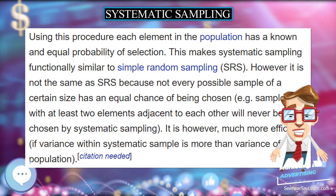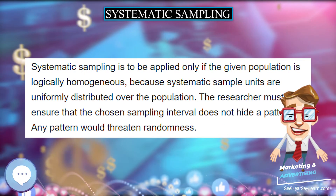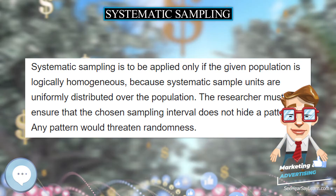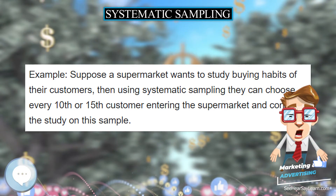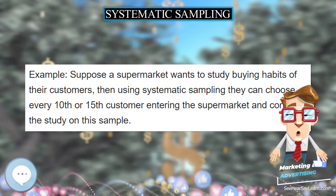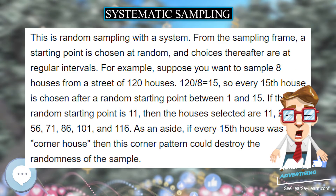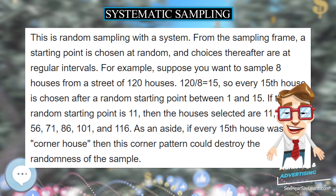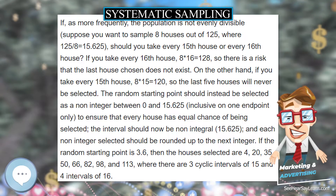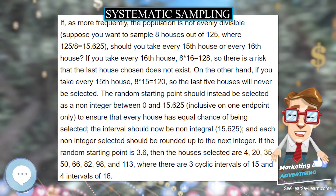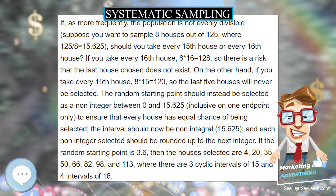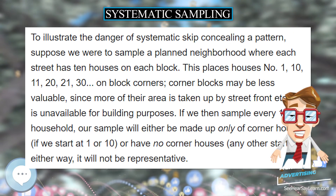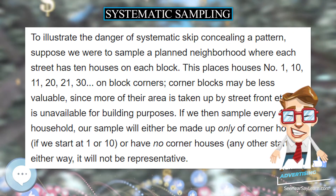It is, however, much more efficient if the variance within the systematic sample is more than the variance of the population. Systematic sampling is to be applied only if the given population is logically homogeneous, because systematic sample units are uniformly distributed over the population. The researcher must ensure that the chosen sampling interval does not hide a pattern, as any pattern would threaten randomness.